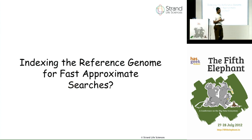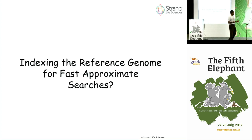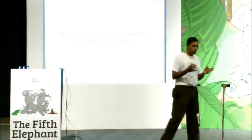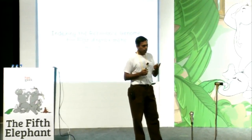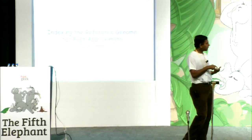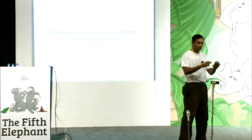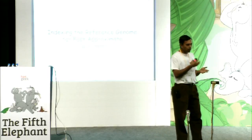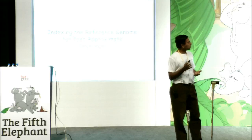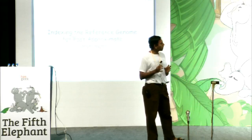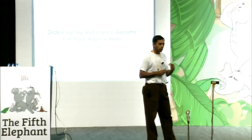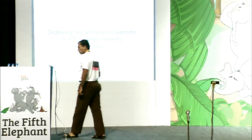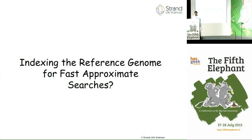This is a classic problem of indexing the reference genome for fast approximate searches — much like how Google indexes web pages into a data structure so that a search query's time is a function of the query length and largely independent of the corpus size. The goal of indexing is to do it one time so that subsequent searches are fast. Here, you index the reference genome once and use it on an ongoing basis, with approximate matching tolerating mismatches and gaps.